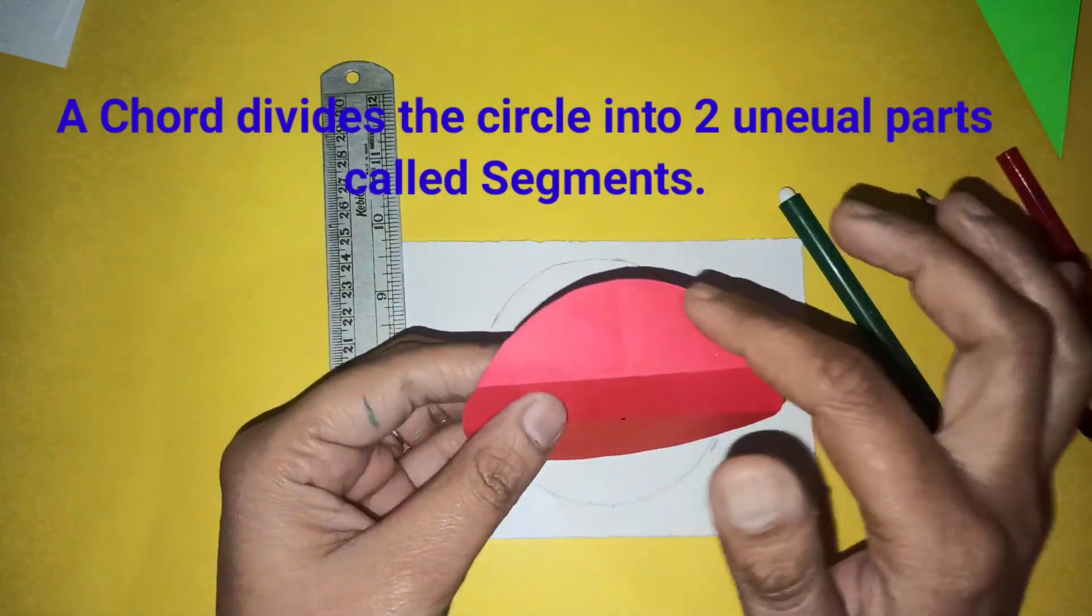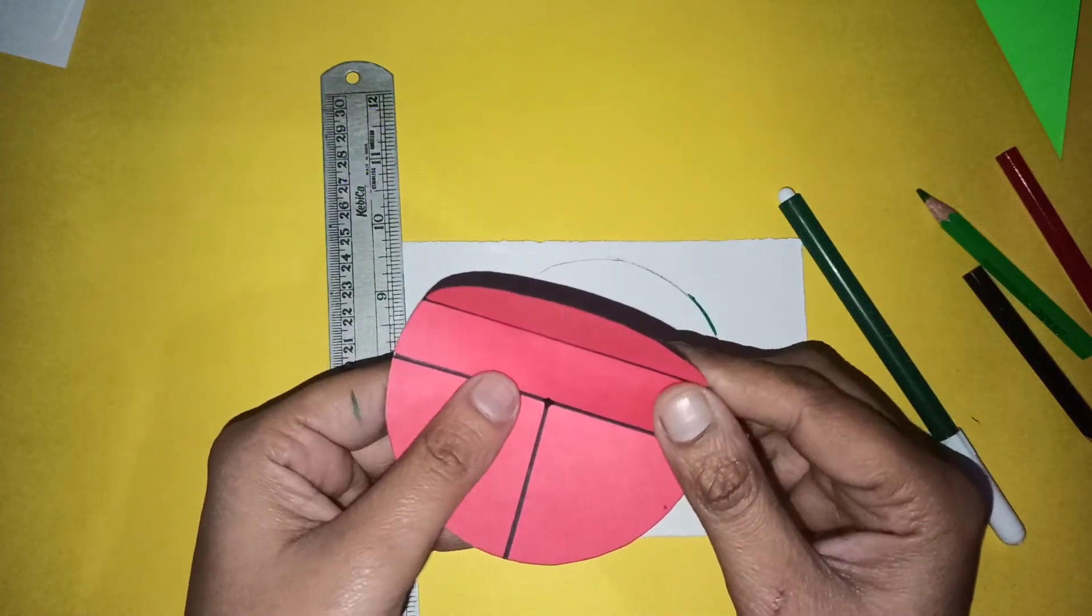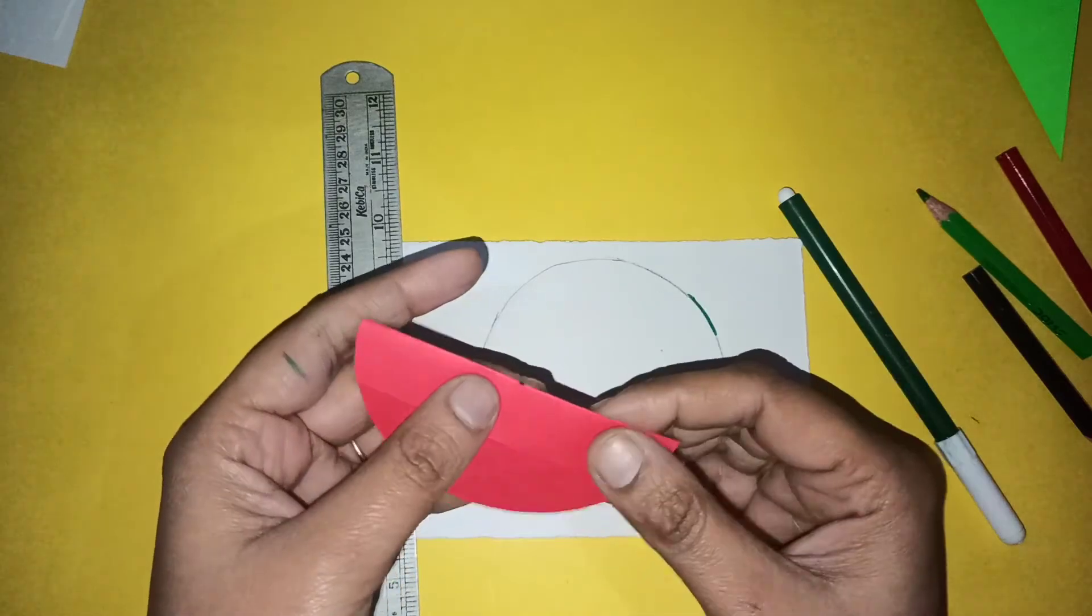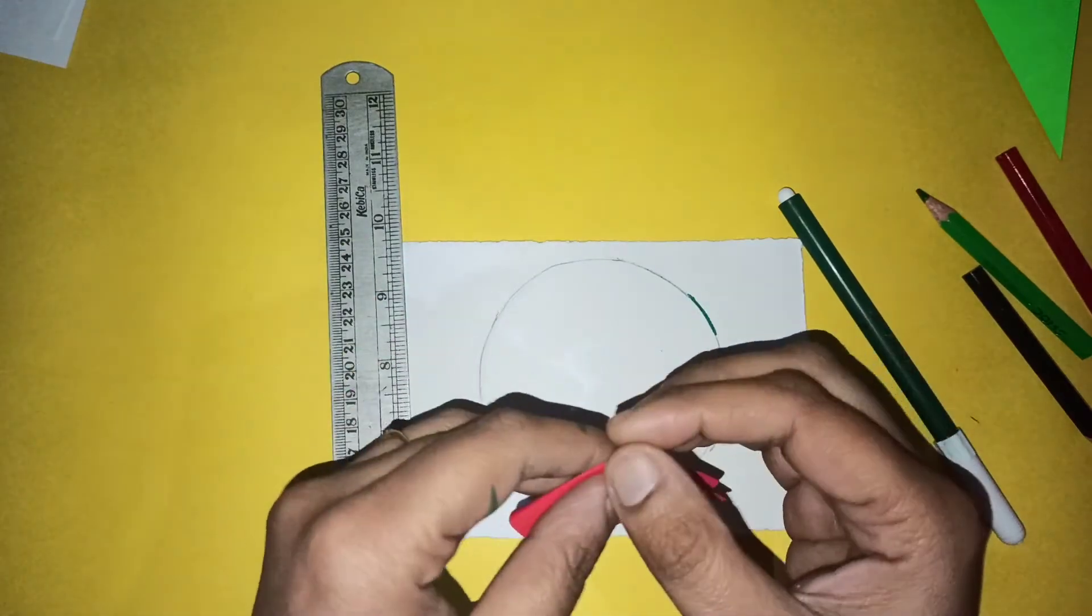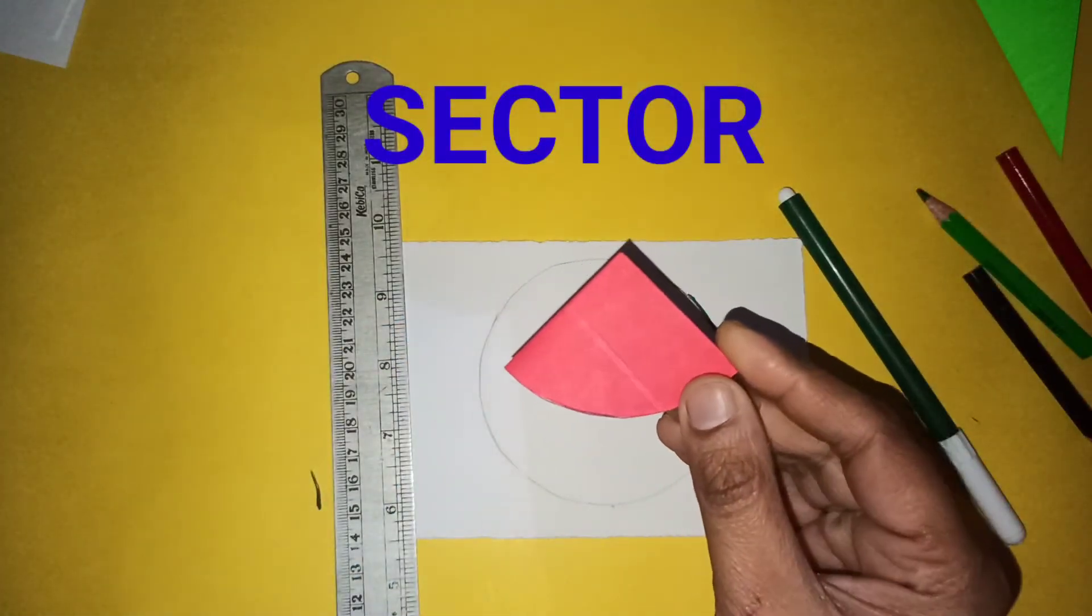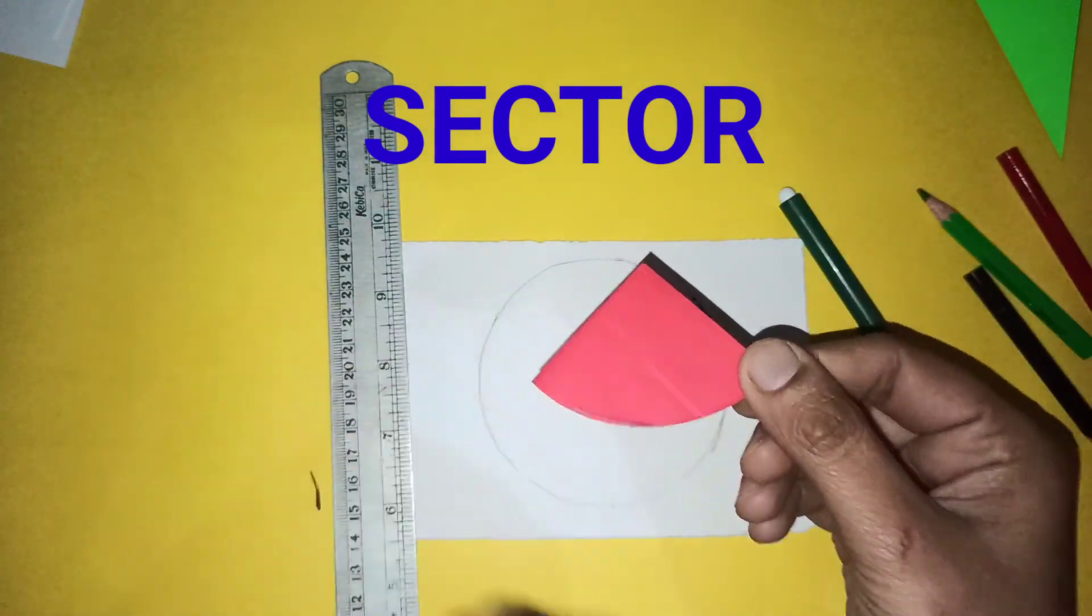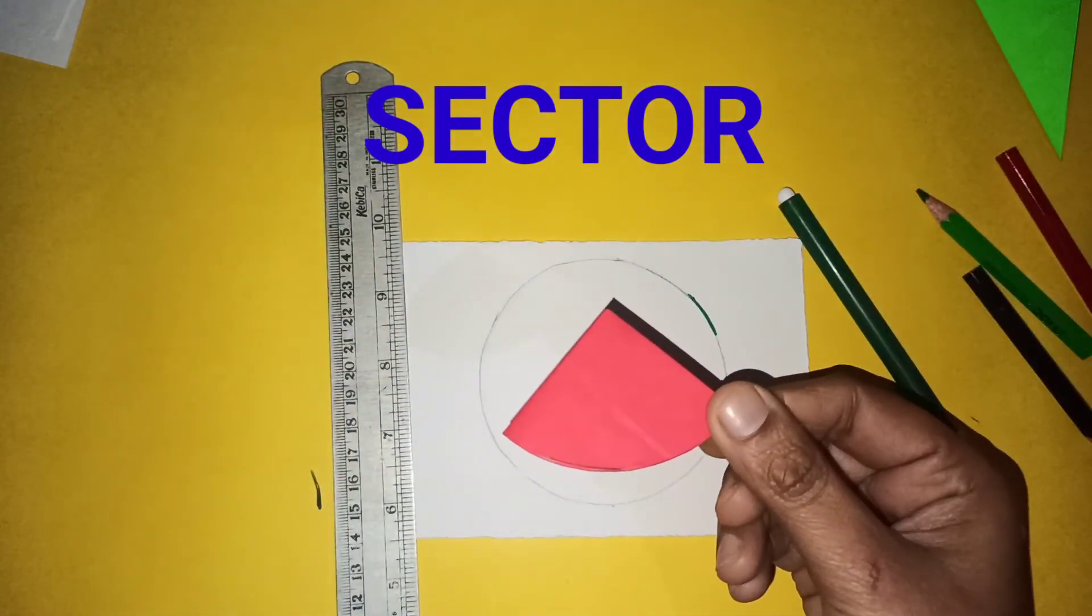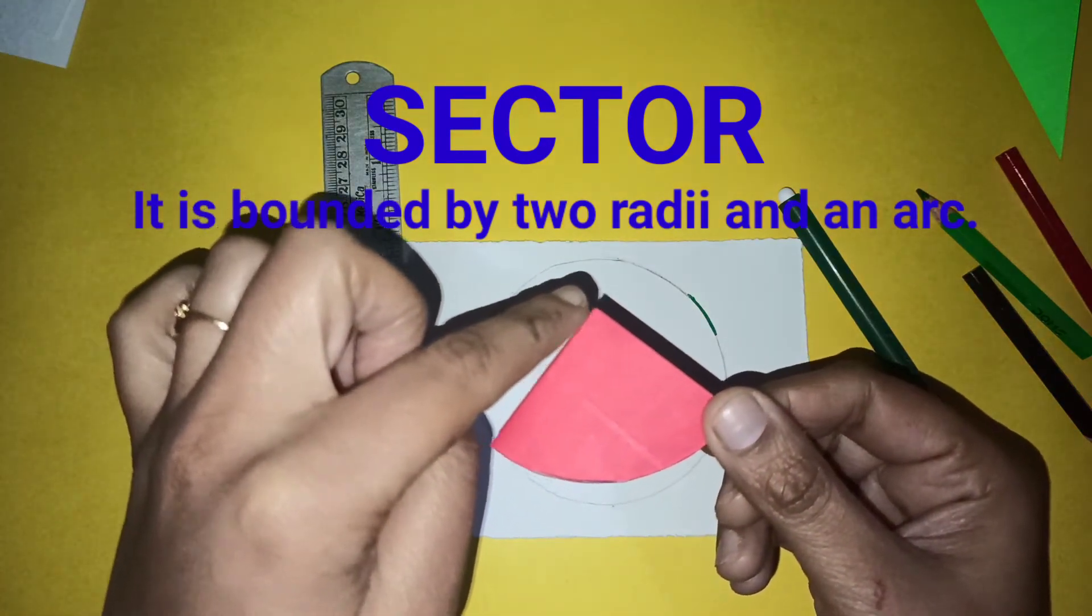Now, sector. What is a sector? If I fold the circle from the center, this is the sector of a circle. See how it looks like a slice of pizza. It has been cut from the center.